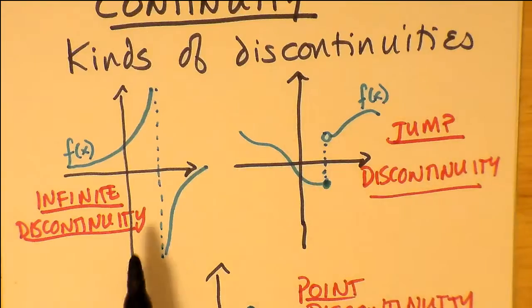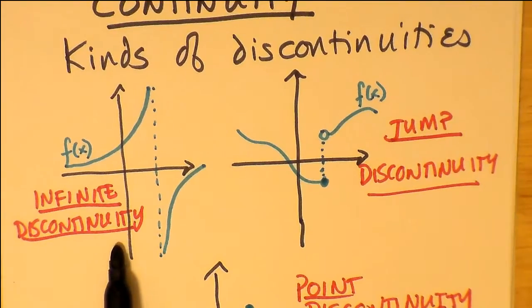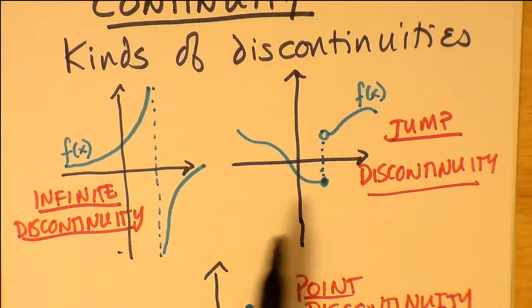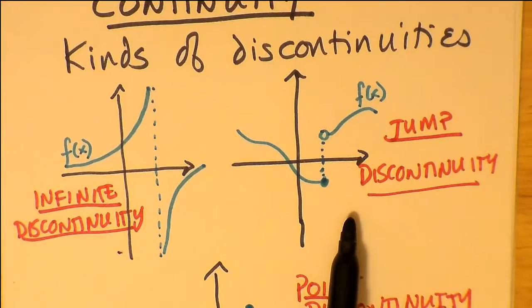So the infinite discontinuity is the case we're going to look at first. Infinite discontinuities is where there's a vertical asymptote. A jump discontinuity is simply where at a particular x value, f(x) approaching from the right is one value but approaching from the left is another value.